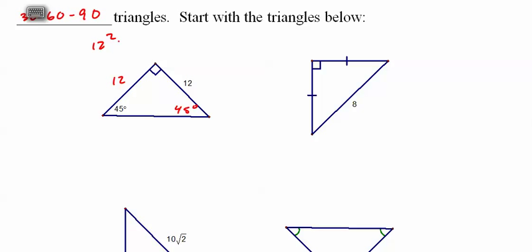If you sit down and do 12 squared plus 12 squared square root, you'll find you get 12 root 2. So whatever the sides are, they're the same.